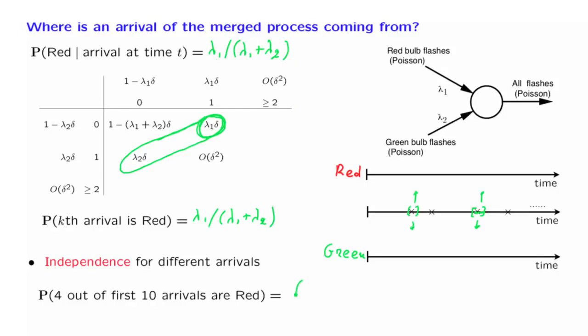Therefore, the answer is going to be given by the binomial probabilities, which is the probability of having four successes in 10 trials. And we obtain lambda 1 over lambda 1 plus lambda 2. That's the probability of a red to the number of red arrivals. And then the remaining probability, 1 minus that, which is lambda 2 over lambda 1 plus lambda 2, to the remaining power, which is equal to 6.